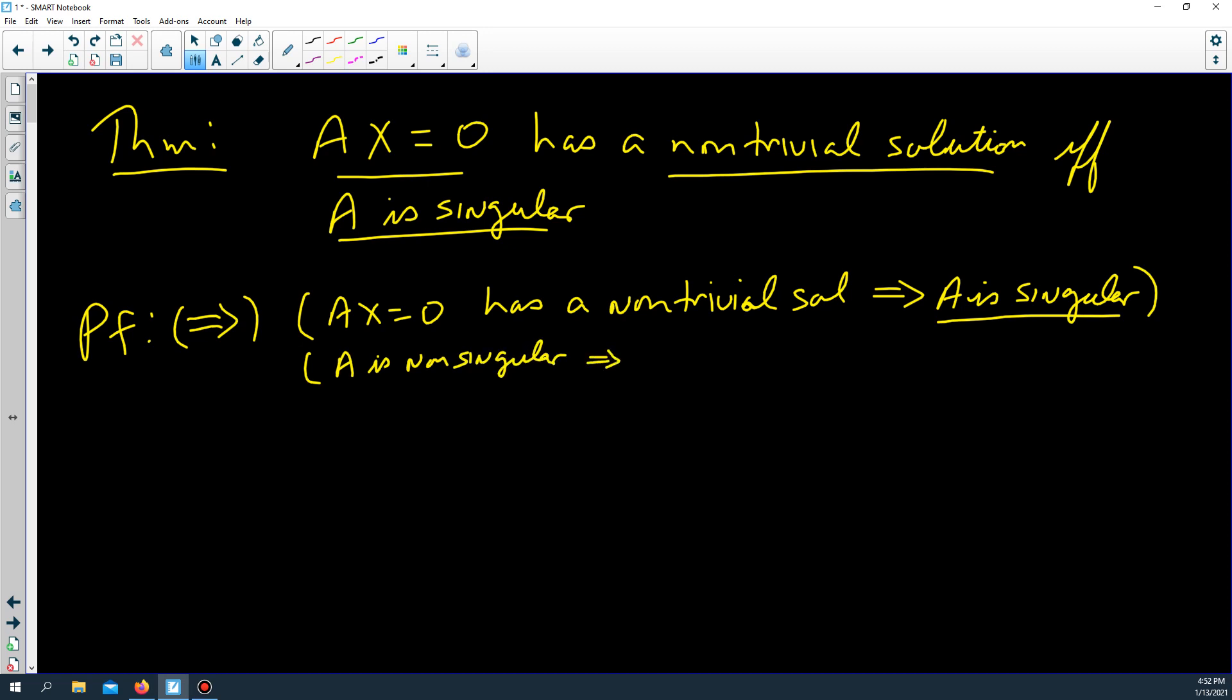That implies that this is not true. That is, it is not the case that Ax equals 0 has a non-trivial solution. That means Ax equals 0 only has the trivial solution.